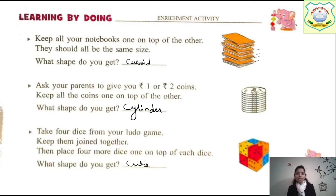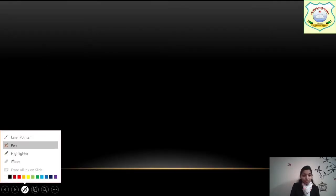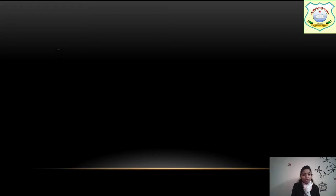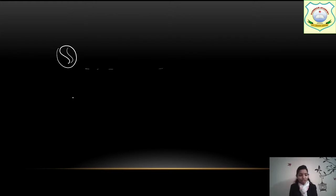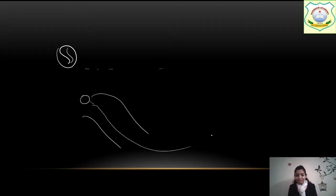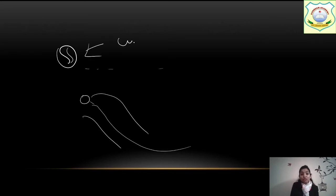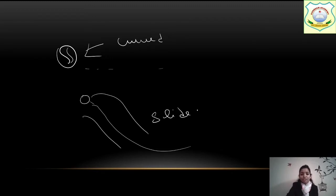Now we are going to do the last page — that is roll or slide. What is roll? What is slide? Let me explain. Roll means — for example, when we play with a ball, the ball rolls from one place to another. And when we sit on a slide, we slide down. Some things slide, some things roll. Basically, things that are curved will roll, and things with a straight surface will slide.